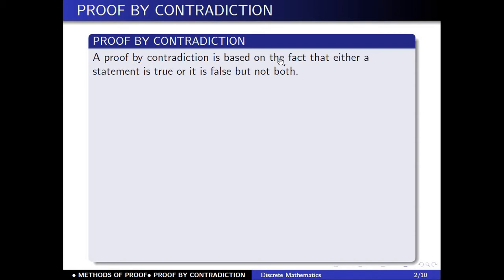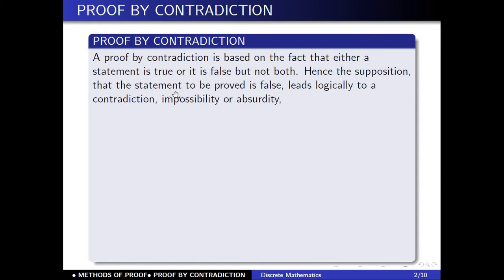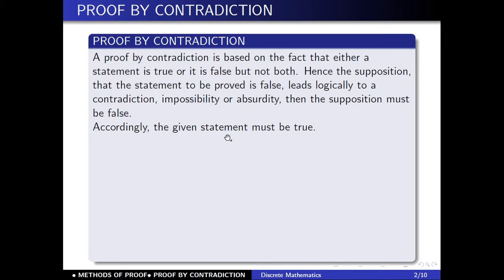A proof by contradiction is based on the fact that either a statement is true or it is false, but not both. Hence, the supposition that the statement to be proved is false leads logically to a contradiction, impossibility, or absurdity. The supposition must be false, and accordingly the given statement must be true.